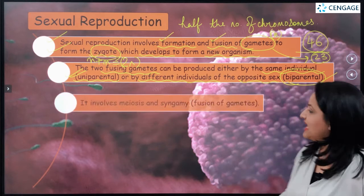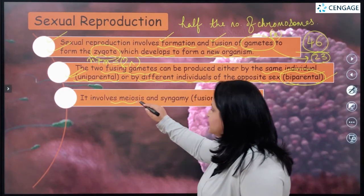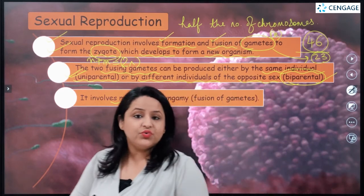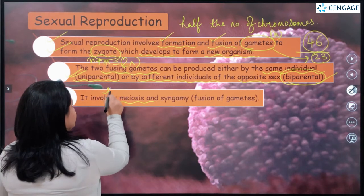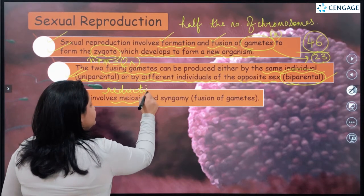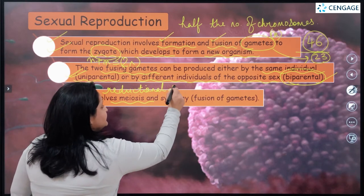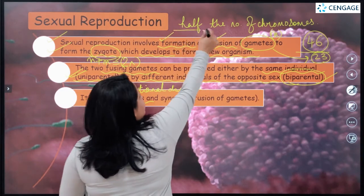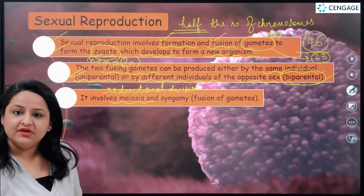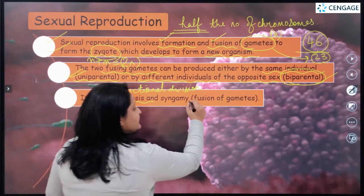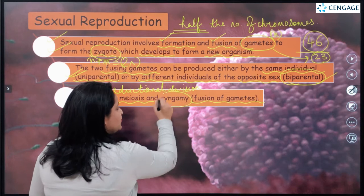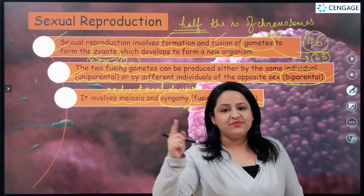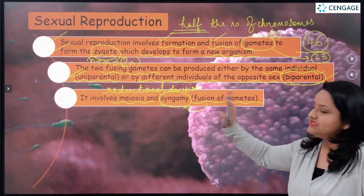Sexual reproduction involves a special type of division known as meiosis, also called reductional division. It is called reductional division because it results in the formation of special cells that have half the number of chromosomes. After meiosis, there is fusion of gametes, a step also known as syngamy. So gamete formation takes place by meiosis, followed by syngamy.